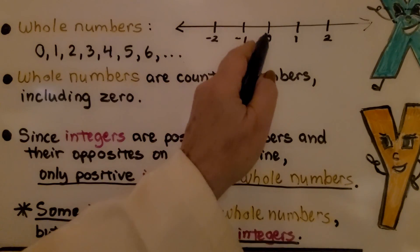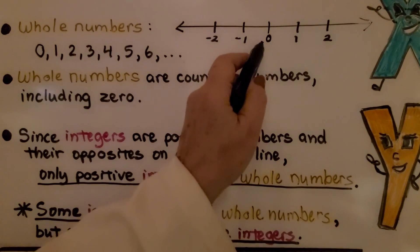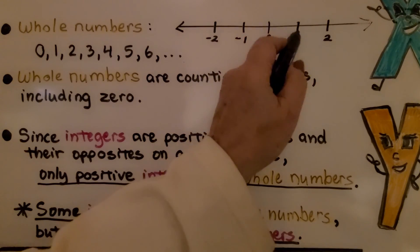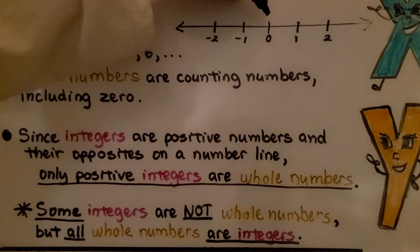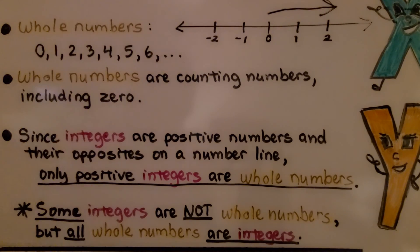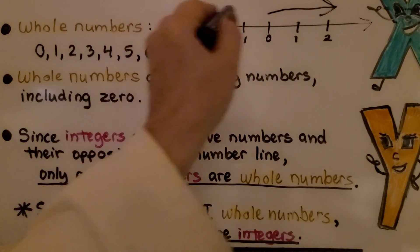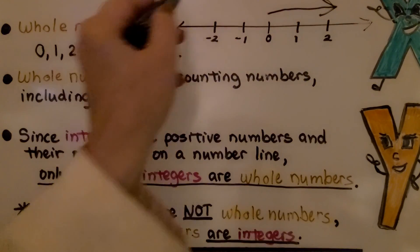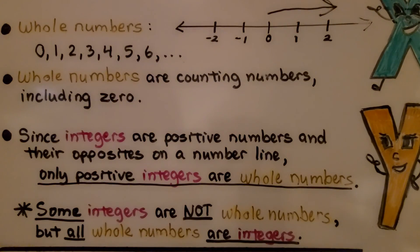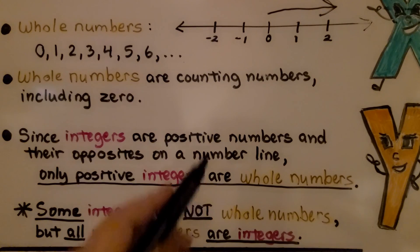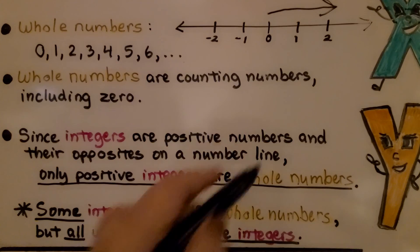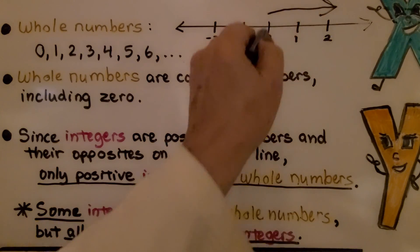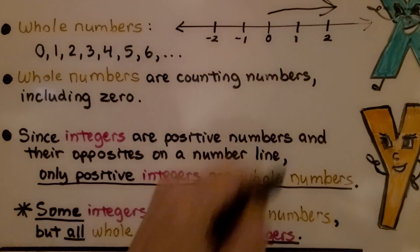Here we have a number line and we've got 0 in the center. So our whole numbers are 0, 1, 2, and so on. So it includes 0 and it heads this way. Integers are all of these. So some integers are not whole numbers. That would be these. But all whole numbers are integers. These are in the subset of integers.